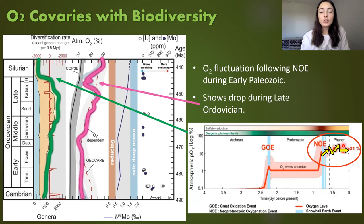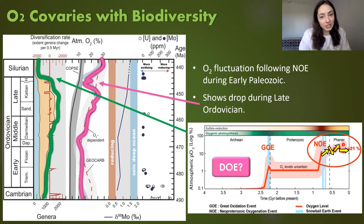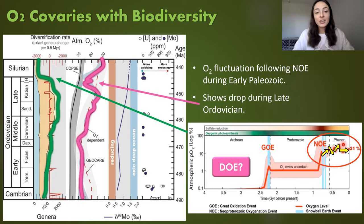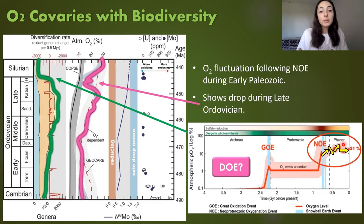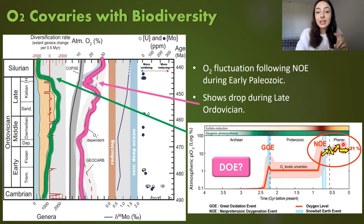After the drop in Ordovician oxygen and biodiversity, we see oxygen rise again — so does that mean there was another oxidation event? Currently, most lines of evidence point to a Devonian Oxygenation Event. This view suggests the NOE oxygenated Earth's atmosphere near completely to modern levels, while the ocean remained relatively anoxic and euxinic throughout the Cambrian, Ordovician, and Silurian, until the mid-to-late Devonian, when there was a major rise in oxygen content.